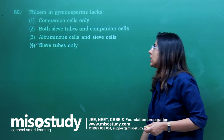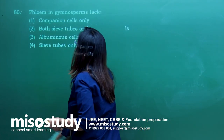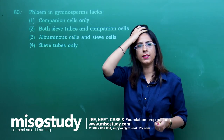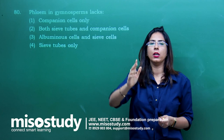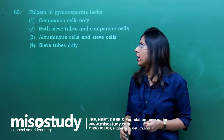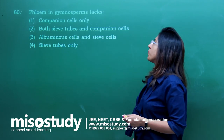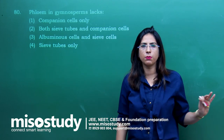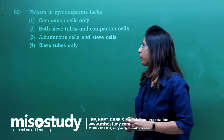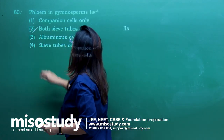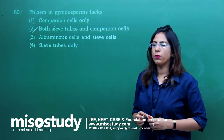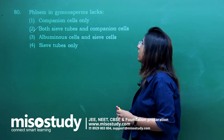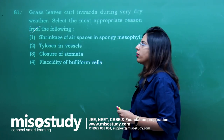Question number 80 — from the anatomy of flowering plants. Phloem in gymnosperms lacks sieve tube cells and companion cells — both these cells are absent. Instead they have albuminous cells present in them. This is a direct question from NCERT — a mentioned exception in the chapter.